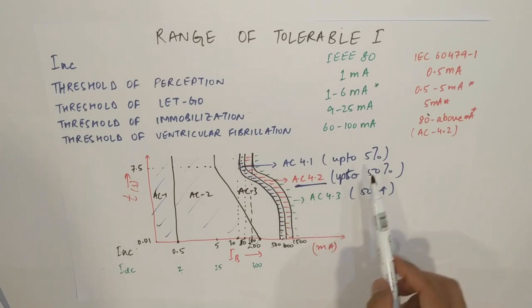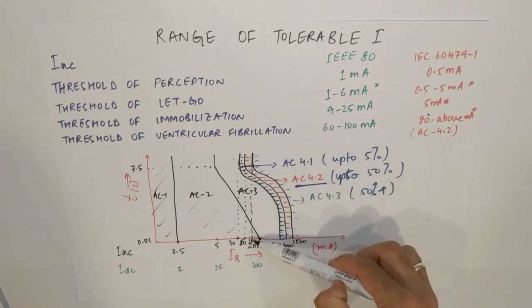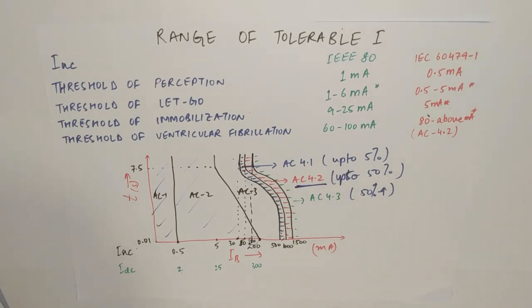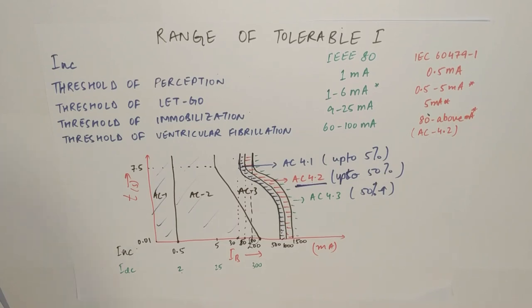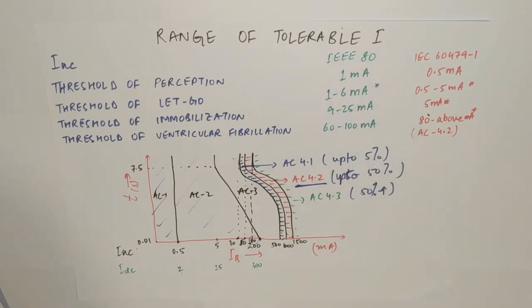And above that, that is AC 4.3. We use 4.2, the final point, which is 80 milliamps if you draw it. In case of DC, this is 0.5 is 2. And this is 5 is 25. And 80 around 300 milliamps. That is ventricular fibrillation threshold. So I hope you got an idea of how it is. Thank you for listening.